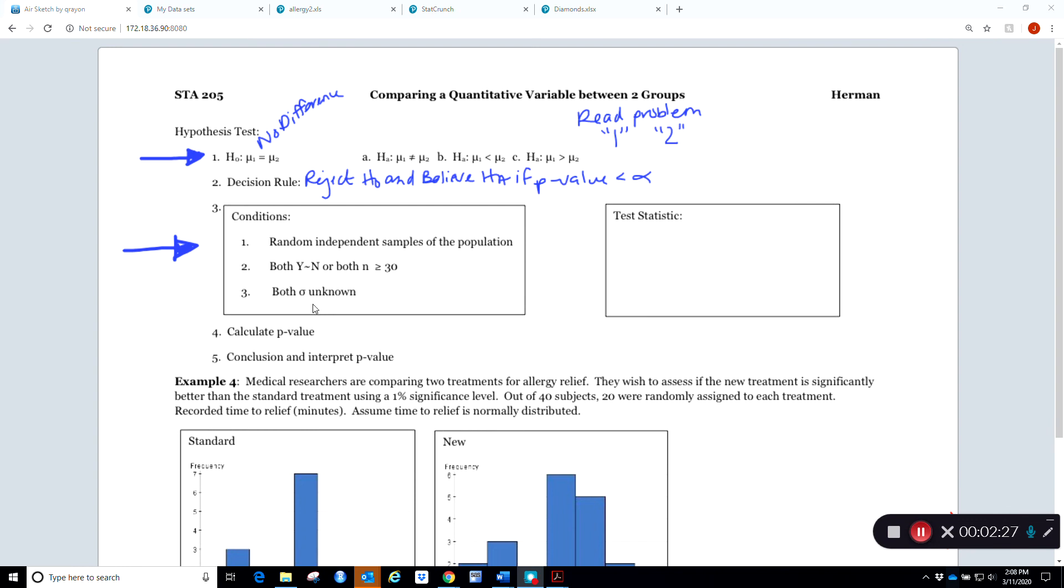Because of that third condition and the population standard deviations being unknown, we're going to be using the t distribution again. Our general form of a test statistic is something minus something divided by something. What we're going to start with is the difference in the sample means, so we take the first sample mean minus the second sample mean, making sure that the one and two subscript match what we have decided up there. We're going to find the difference in sample means.